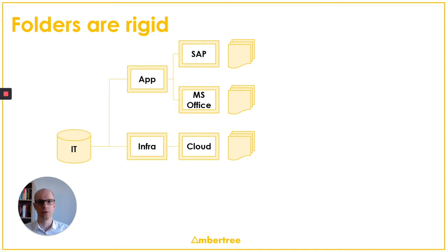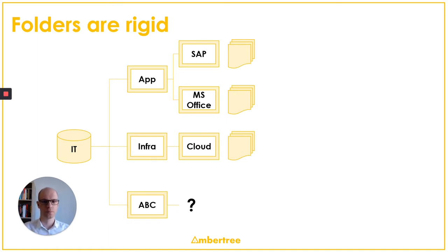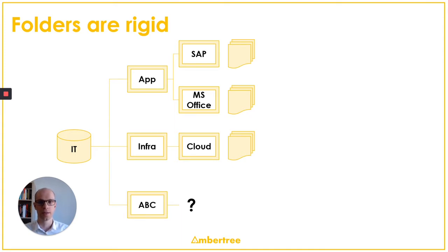For example, let's say you've built a structure for your company where you've separated application and infrastructure information. Now, what if your company merges with another company, company ABC, which already has its own systems and its own documentation? What do you do? Do you keep this documentation separate? Do you merge it into your own? How do you set up ownership? What about different languages? This already undermines the original logic, or at least the structure, of your knowledge base.